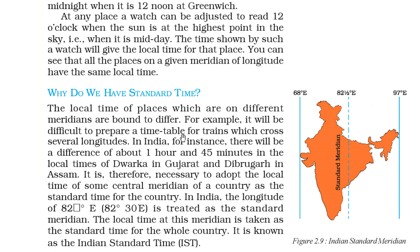For example, it will be difficult to prepare a timetable for trains which cross several longitudes. In India, for instance, there will be a difference of about 1 hour and 45 minutes in the local time of Dwarka in Gujarat and Dibrugarh in Assam. Therefore it is necessary to adopt the local time of some central meridian of a country as the standard time of the country.